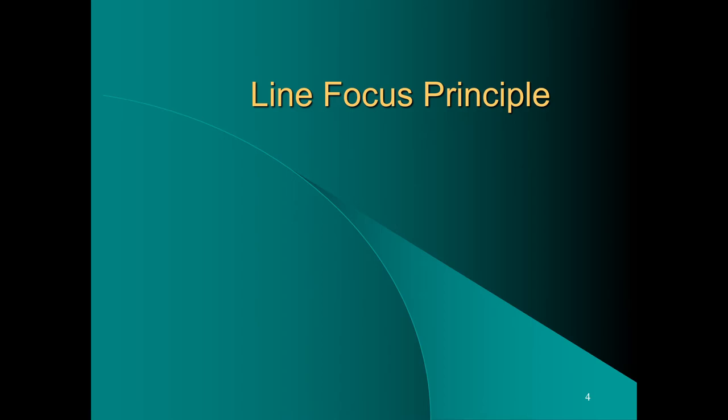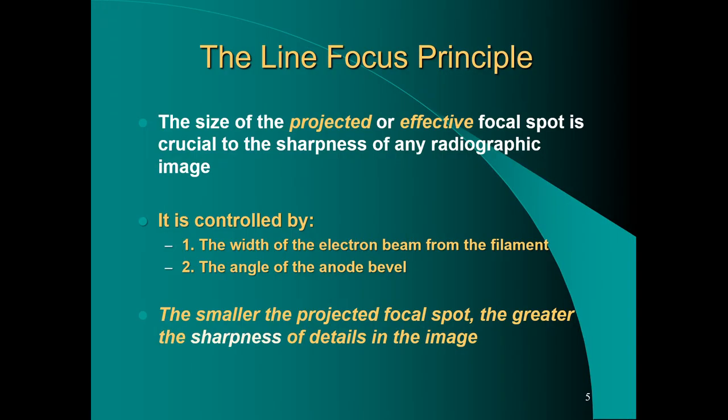The line focus principle is simply the size of the projected or effective focal spot and its relationship to sharpness of any radiographic image. It's controlled by the width of the electron beam coming from the filament and secondly by the angle of the anode bevel. The smaller the projected focal spot, the greater the sharpness of details within the image.